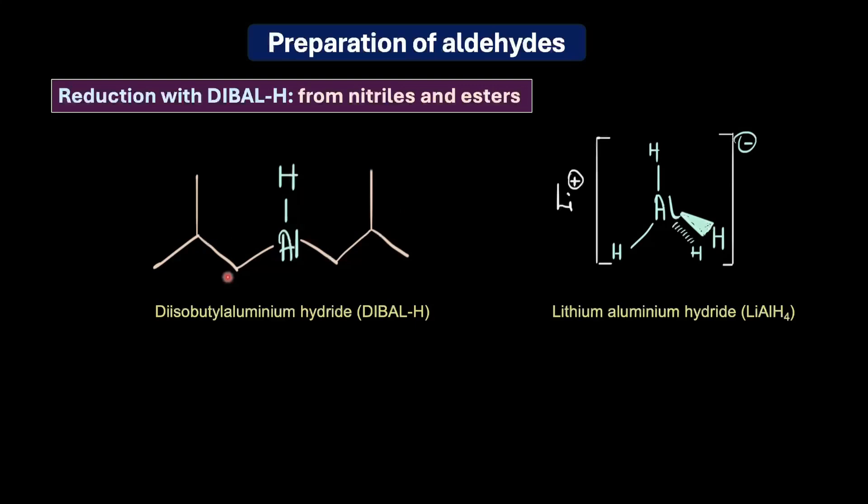What is special about DIBAL-H? What makes this reducing agent a favorite for synthetic chemists? The first thing is obviously the steric hindrance. DIBAL-H has two bulky isobutyl groups attached to the aluminum atom. In contrast, lithium aluminum hydride has these tiny hydrogen atoms attached to it. The large isobutyl groups in DIBAL-H create significant steric hindrance around the only reactive hydrogen atom here, making it less accessible or available for reduction reaction. In other words, it is more selective.